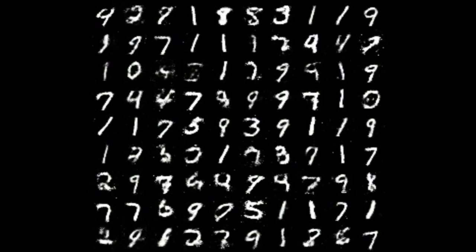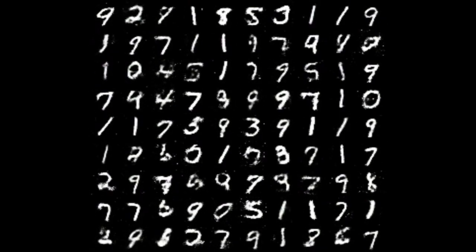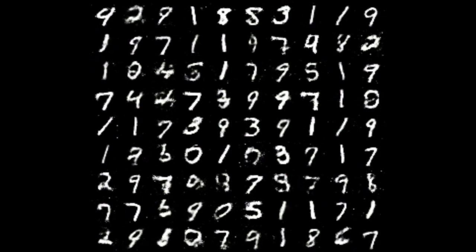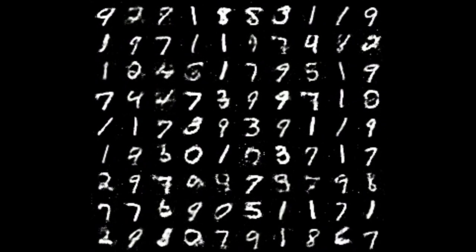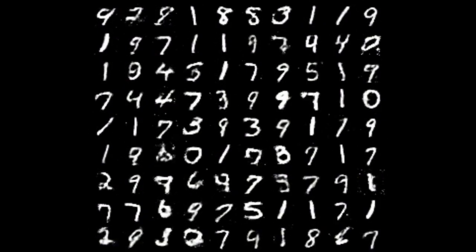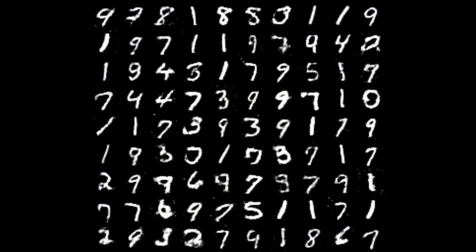By the end of this course, you will be able to train a model that will progressively get better at generating fake handwritten digits, like what you're looking at right now. And you will understand every single line of code and every single mathematical function that goes into creating such a model. I'm pretty excited to learn this, so let's get started.